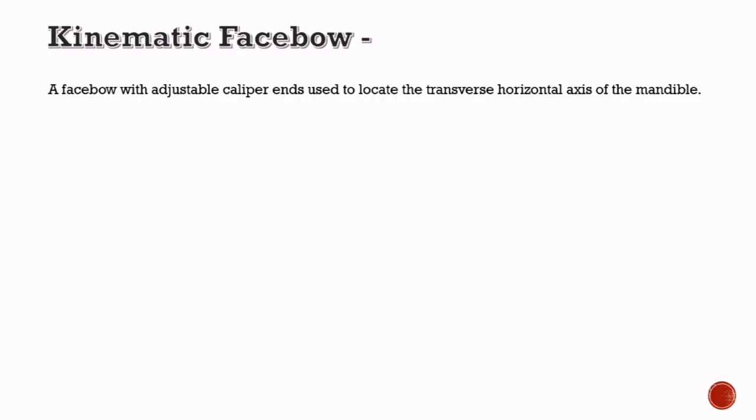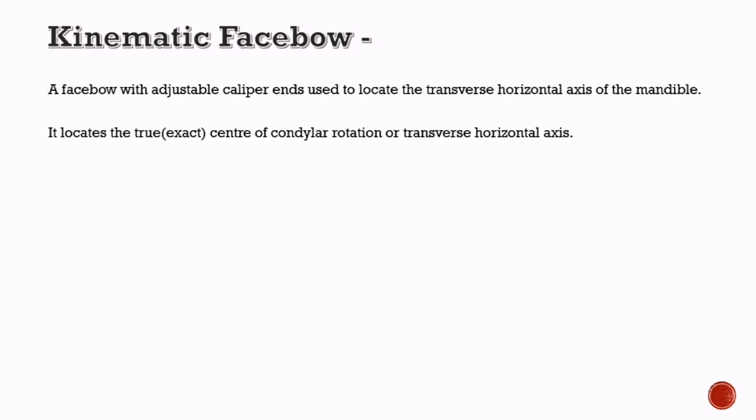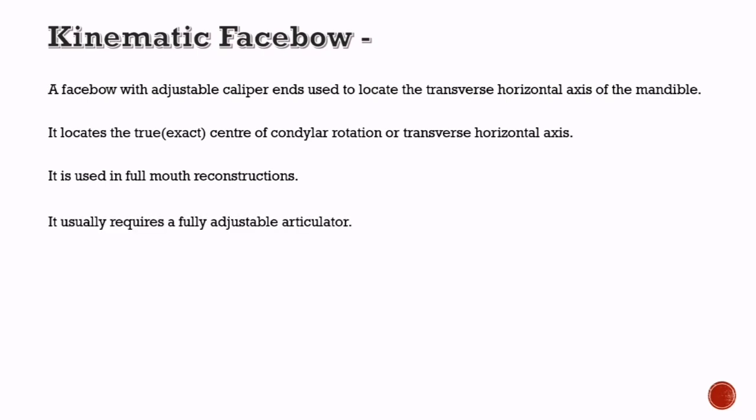Now let's know about kinematic face bow. It is a face bow with adjustable caliper ends used to locate the transverse horizontal axis of the mandible. It locates the true or exact center of condylar rotation or transverse horizontal axis. It is used in full mouth reconstructions and usually requires a fully adjustable articulator.